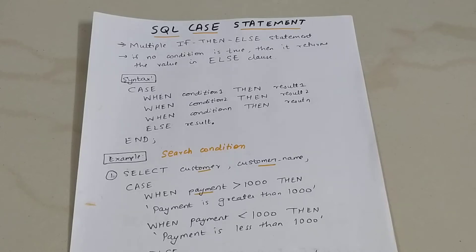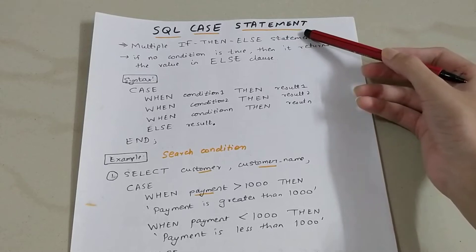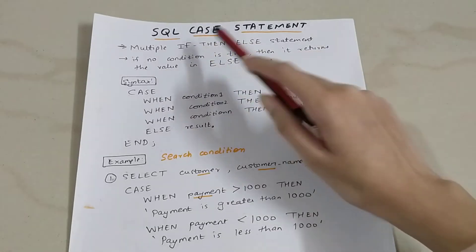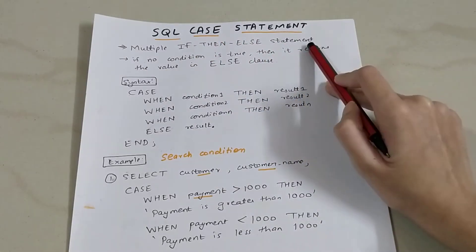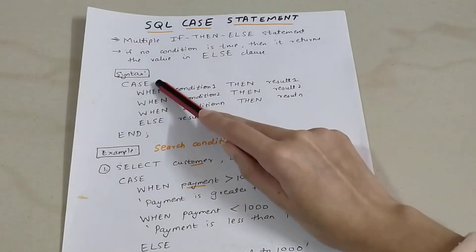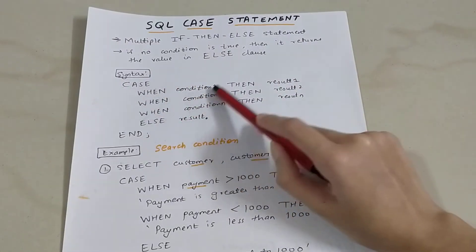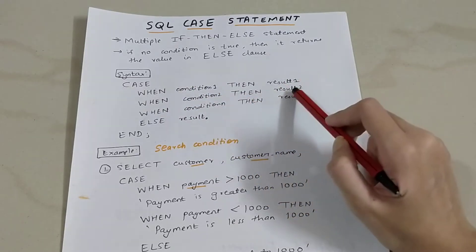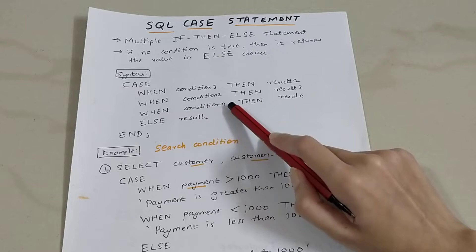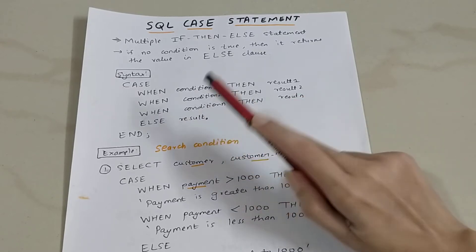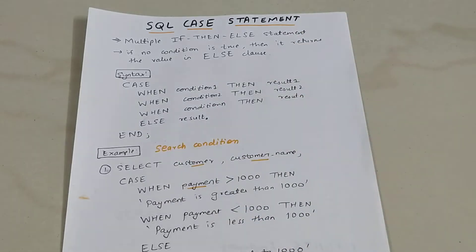Hello everyone, welcome back to my channel. In today's video we are going to study about the CASE statement in SQL. The CASE statement is basically a control statement — it's like multiple if-then-else statements. The syntax is: CASE, then WHEN condition 1 THEN result 1, WHEN condition 2 THEN result 2, up to WHEN condition N THEN result N, ELSE some result, END.